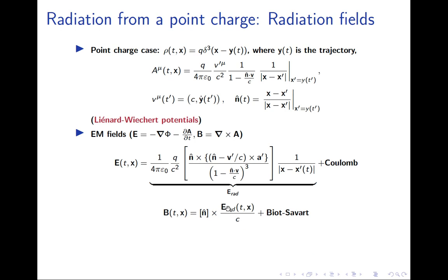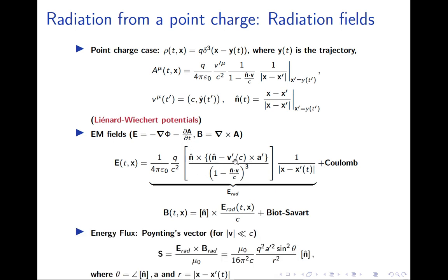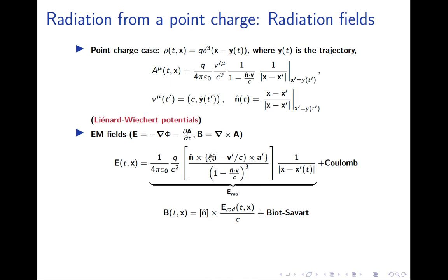One word about the notation found in many EM books including Griffiths: the use of square brackets suggests that velocities, positions, and other quantities are taken at the retarded time, not the current time. Although the field is produced at the current time, whenever we use square brackets it means all quantities inside — the velocity, the acceleration of the particle, the unit vector from the particle to the field — are all evaluated at the retarded time t-prime.